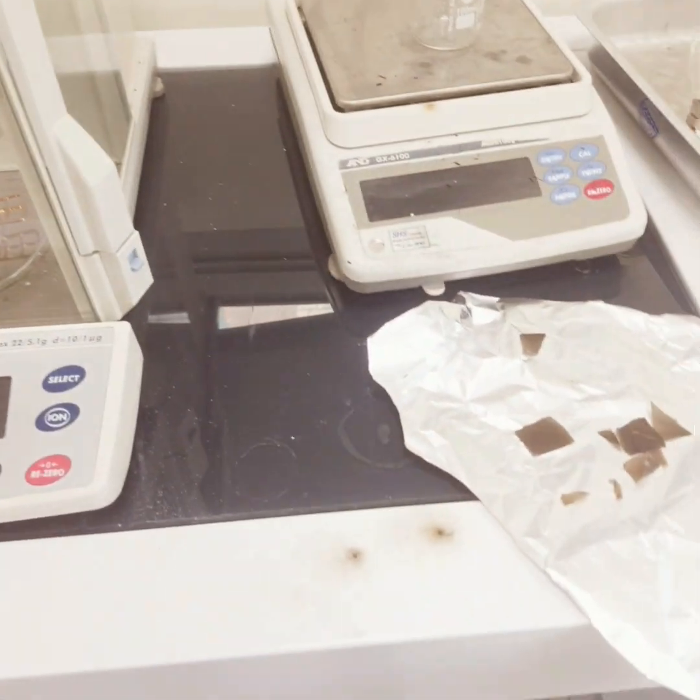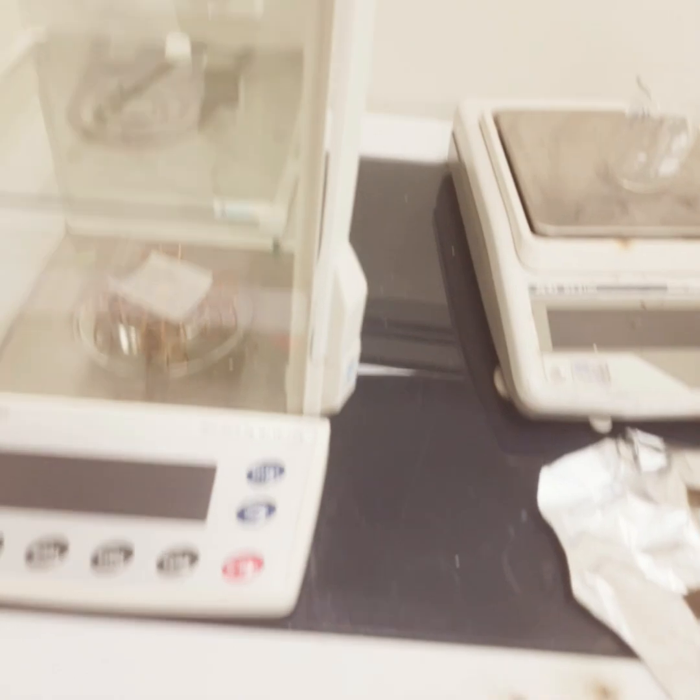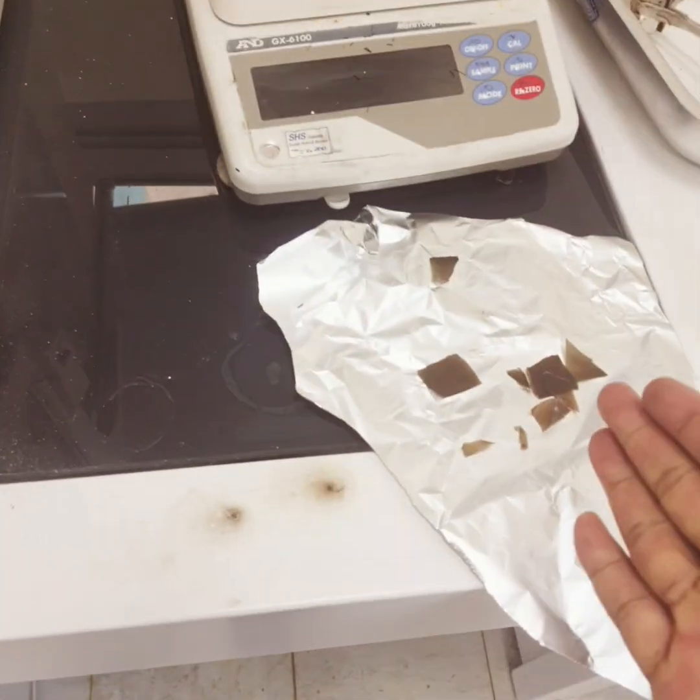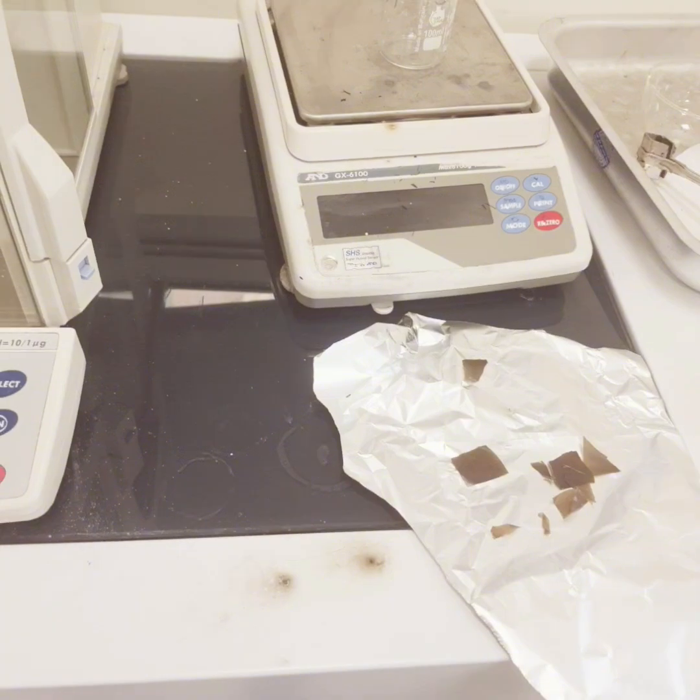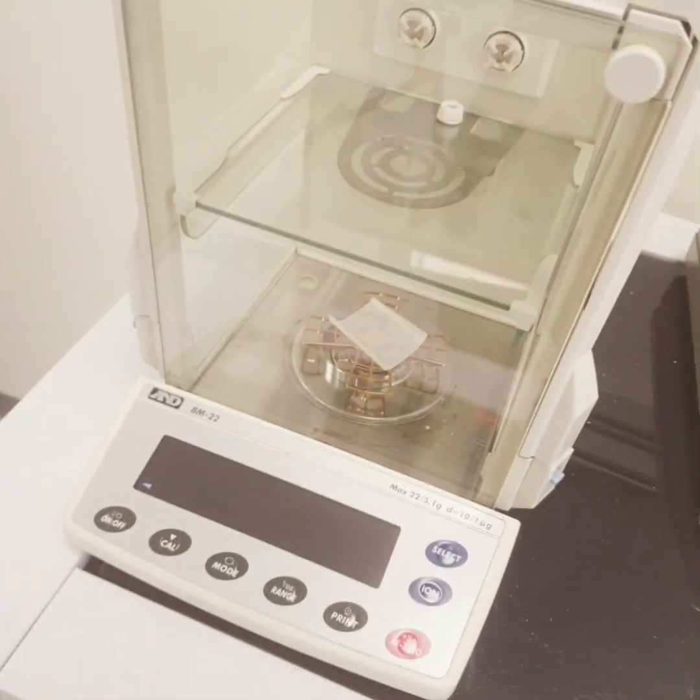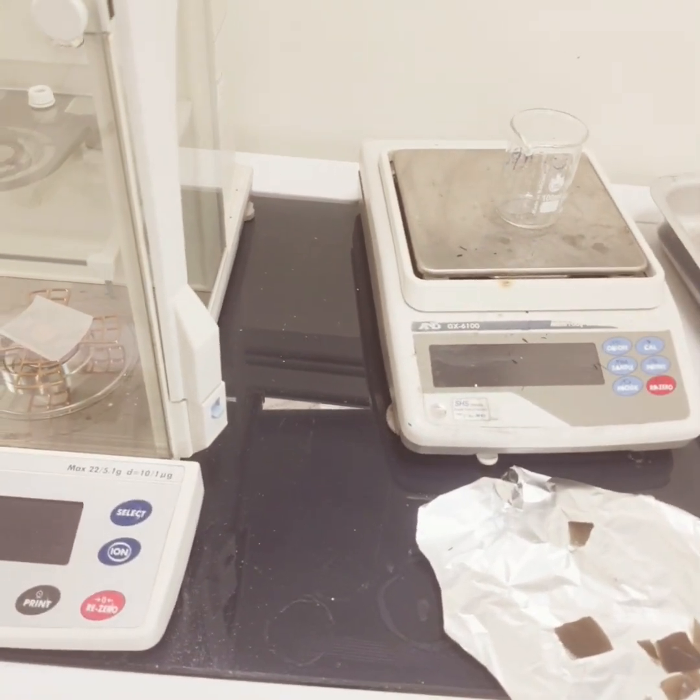Today we are going to check the path phase for the degradation of the dye using a membrane. For doing this we have to add certain kind of solvents, that is EDTA and tertiary butyl ether.